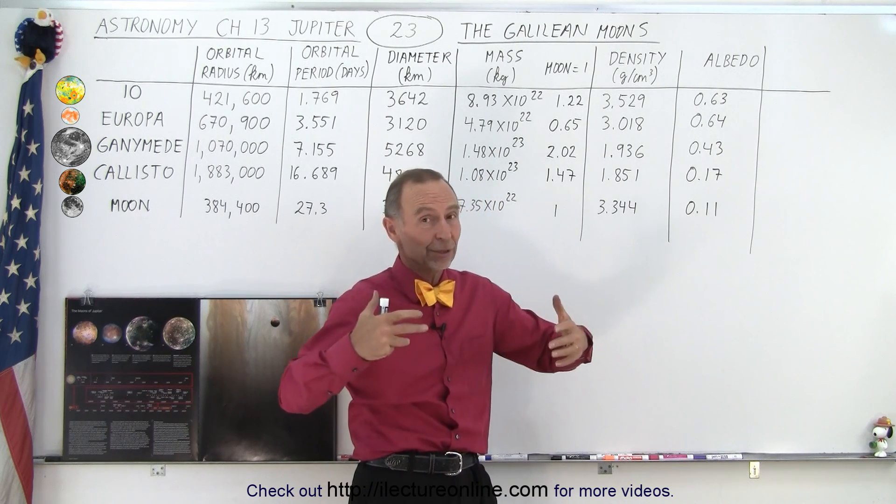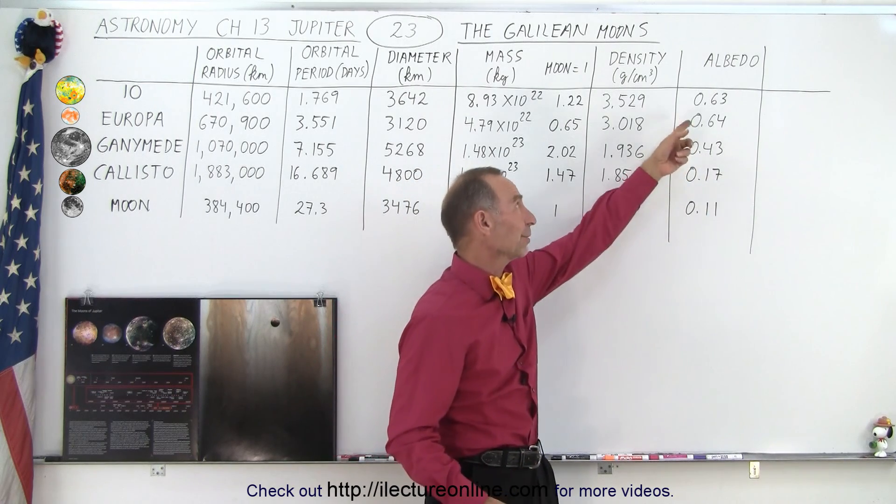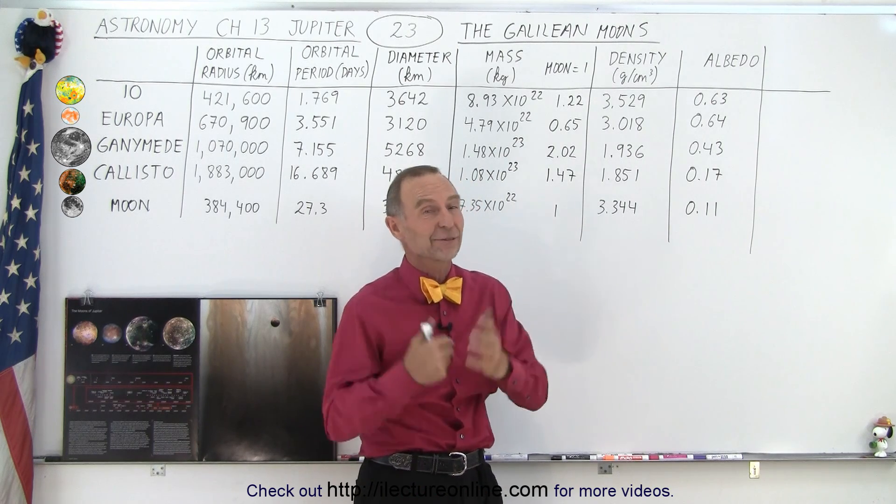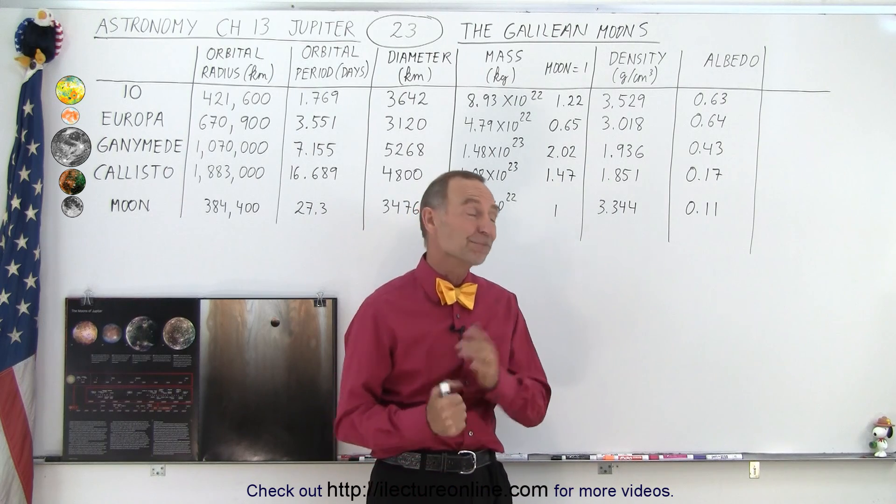Although the moon, the full moon at night, still looks very bright, can you imagine if the moon had the albedo of Io on a full moon? It would be absolutely phenomenal. We'd get about five times as much light from the moon as we do now, maybe even six times as much light.